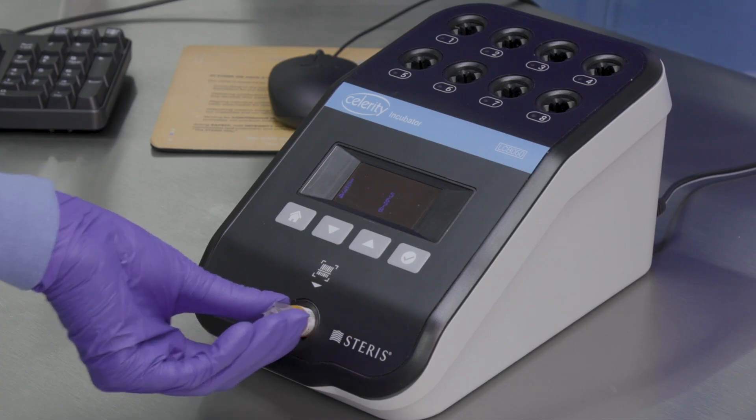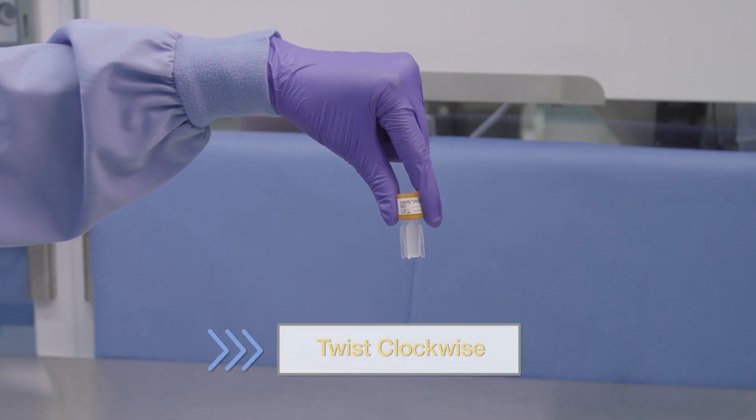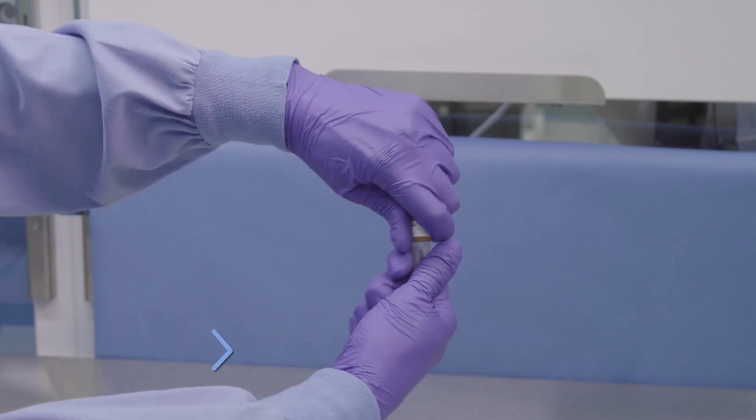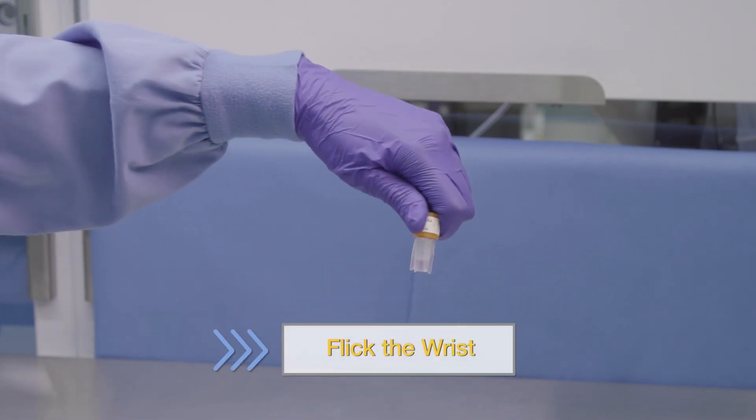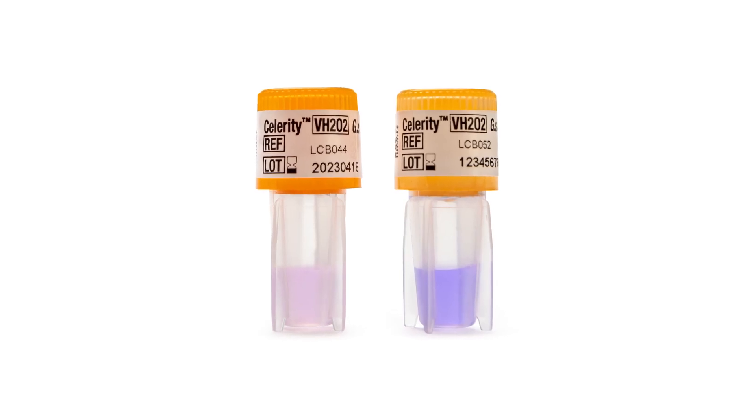Scan the BI using the barcode scanner on the incubator. Then activate the BI by twisting the cap clockwise until resistance is felt. Transfer the media from the cap to the vial by holding the BI firmly by its cap and flicking the wrist once. The media will be pink or purple.